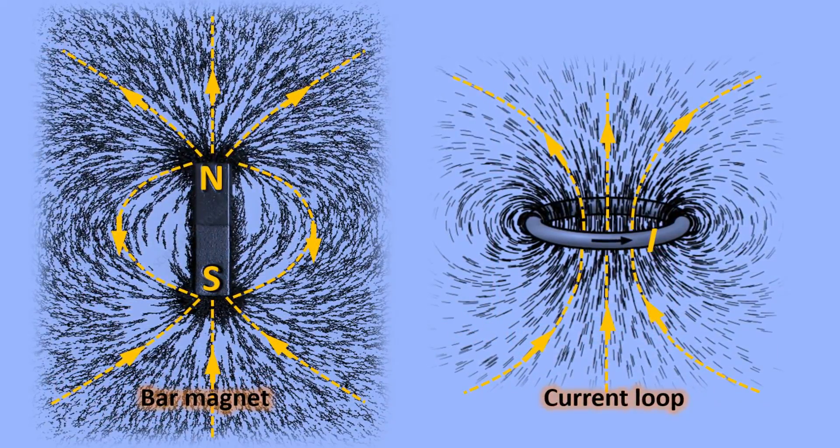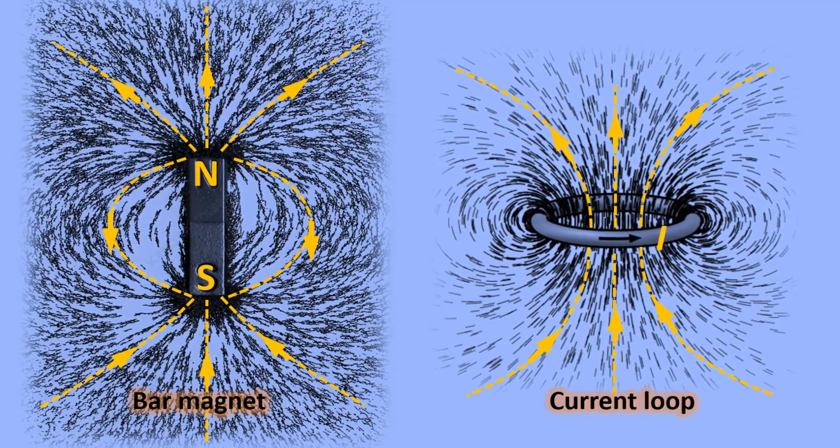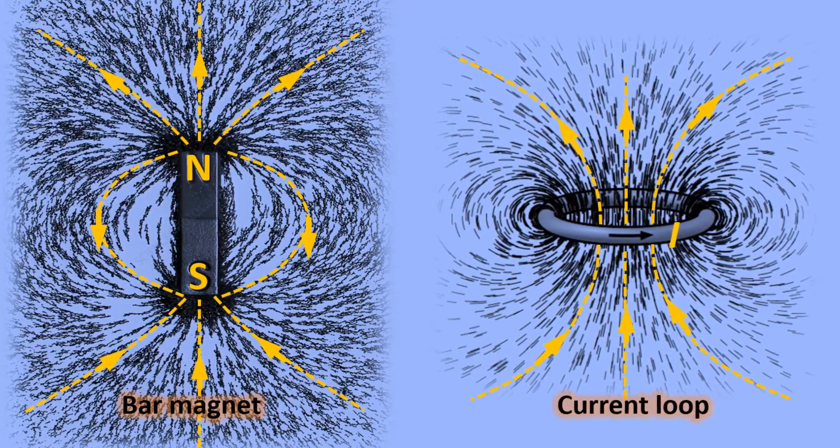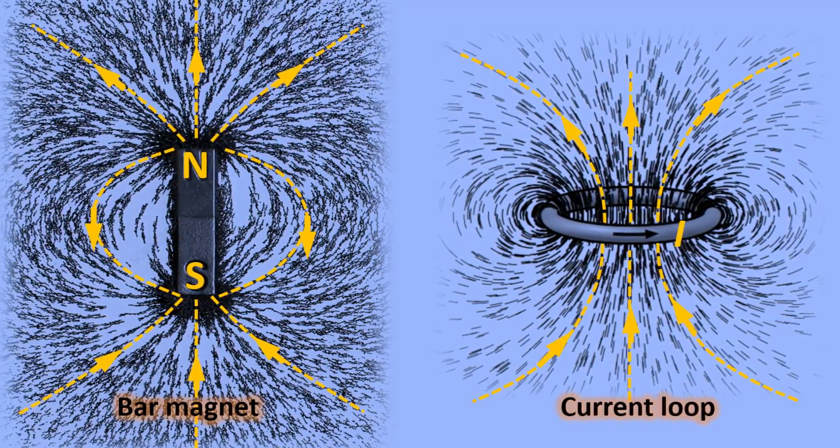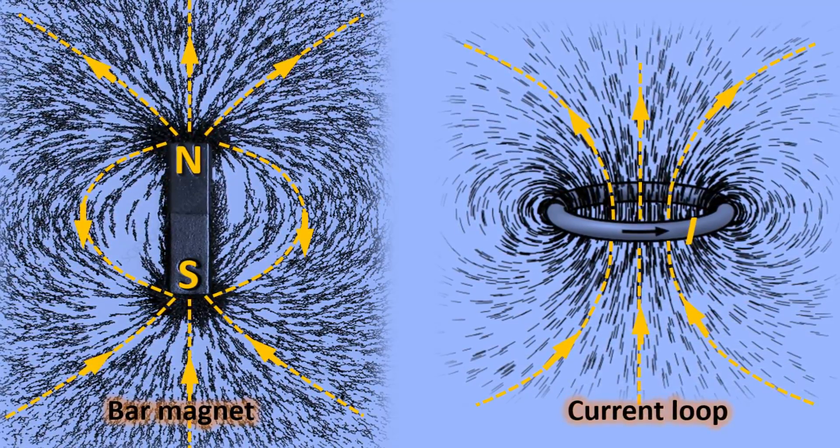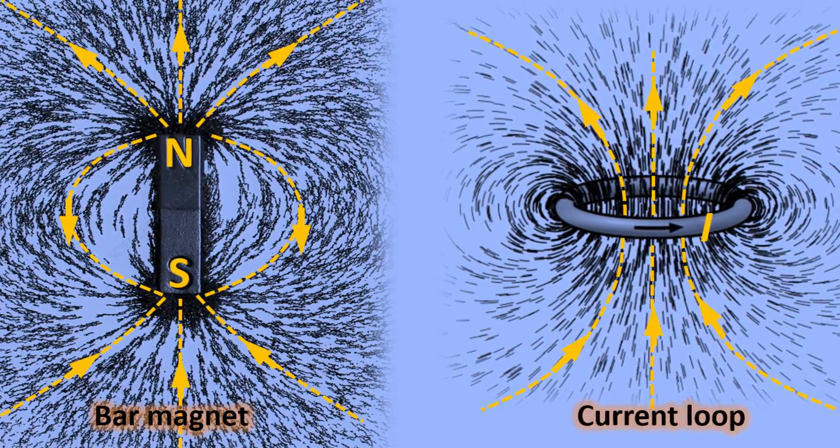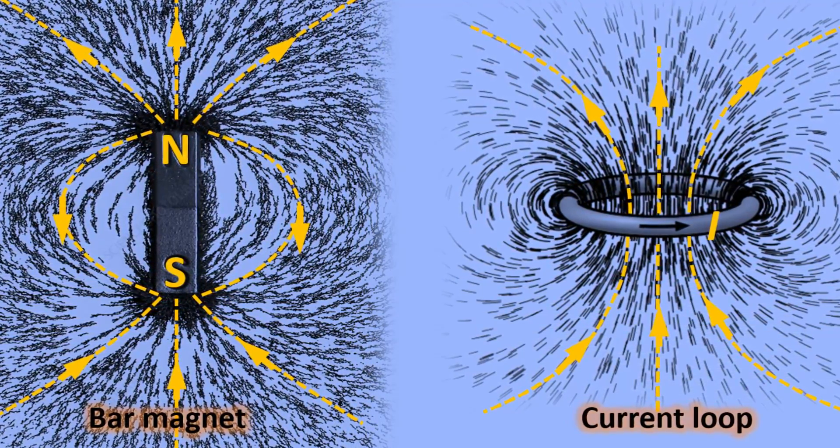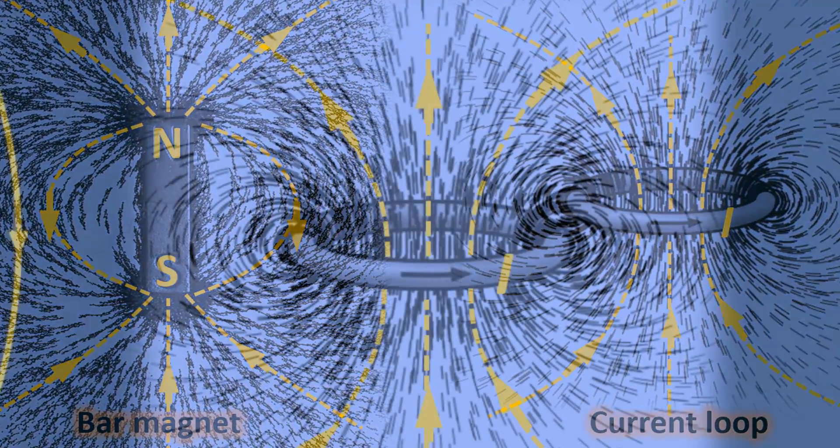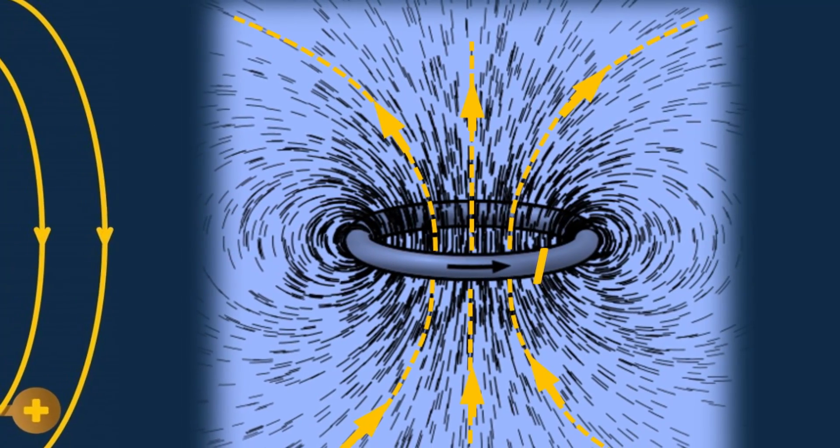Seeing that current-carrying wires exert a force on each other further reinforced Ampère's conjecture that current is the source of all magnetism. But how would a bar magnet with magnetic field patterns as observed in iron filings be produced by currents? He convinced himself mathematically that the metallic constituents that made up the magnet must be composed of many little current loops, as shown on the right, whose magnetic field would add up to produce the magnetic field patterns observed for a bar magnet.